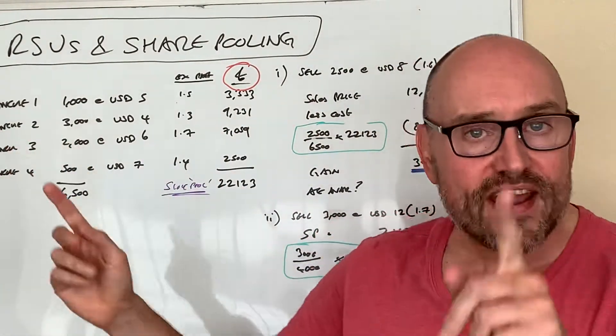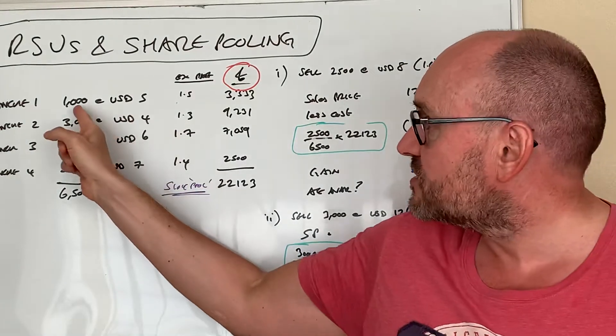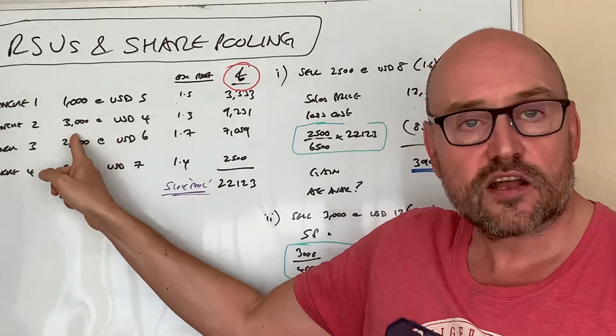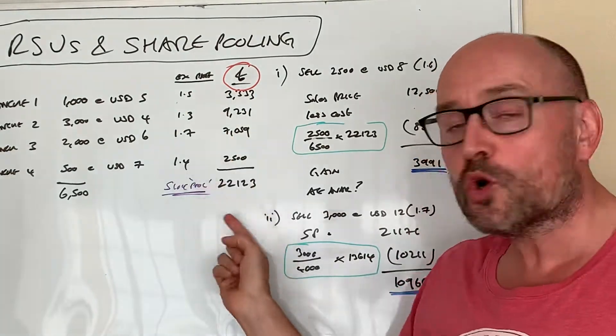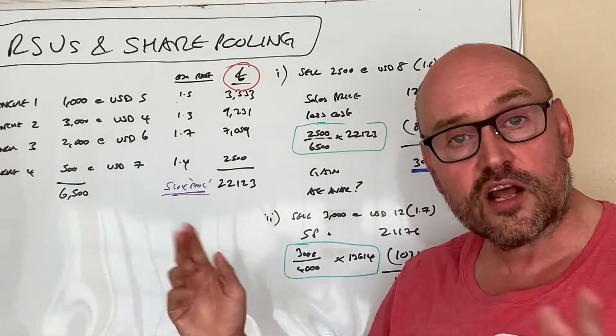Rather than say, like I said at the start, well really that two thousand five hundred is a thousand of that and fifteen hundred of that. No, that's not how you do it. That's the whole pooling mechanism. You just lump it all together and just say number sold divided by total multiplied by the pool cost.